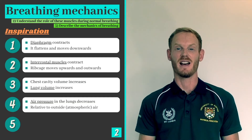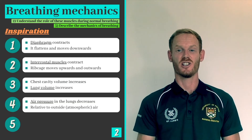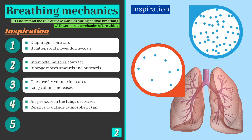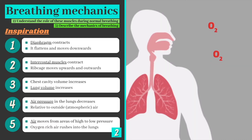When the lungs expand, air particles within spread out to fill the larger space and in doing so get further apart from one another. This means that the air pressure inside the lungs drops below that of the outside air. Since particles move from areas of high pressure to areas of low pressure, oxygen-rich atmospheric air rushes into the lungs in response.